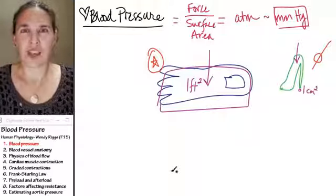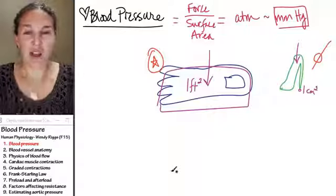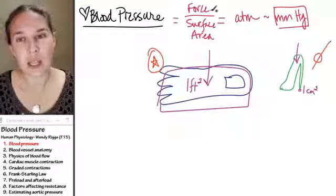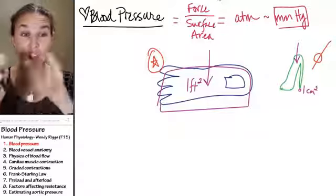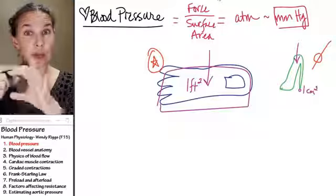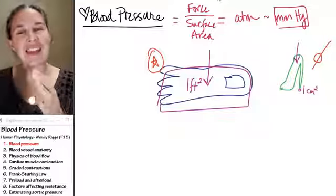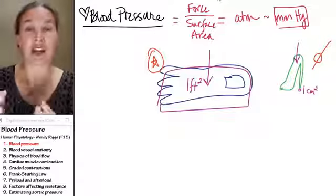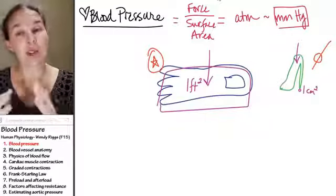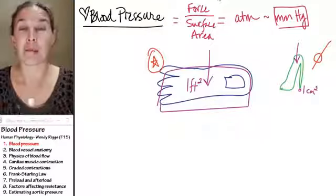Pressure of fluid. Fluid can apply a force especially to the walls of the tube that it is contained by, and then the amount of surface area in that wall, that's going to be the measurement of blood pressure.